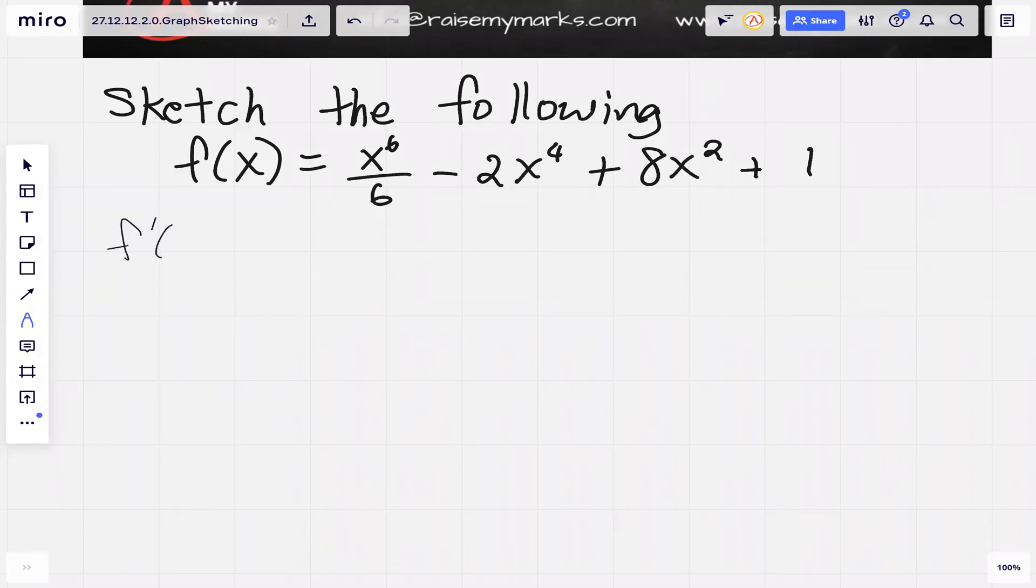So f prime is 6x to the power 5 over 6 minus 8x cubed plus 16x, which simplifies to x to the power 5 minus 8x cubed plus 16x.